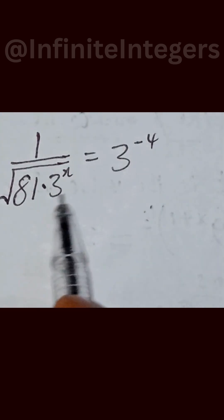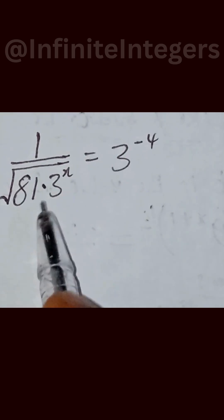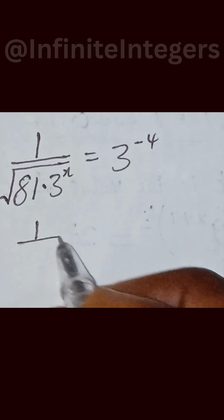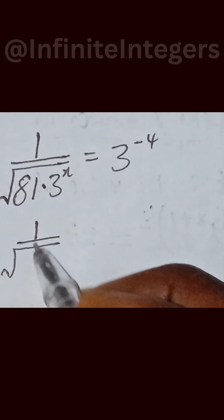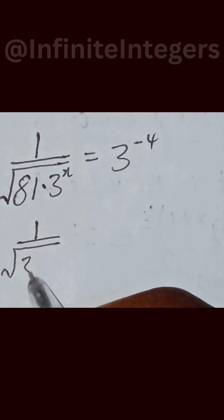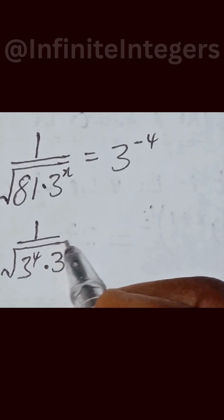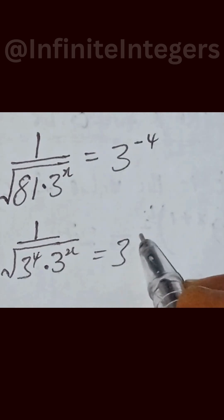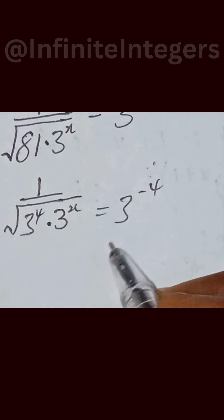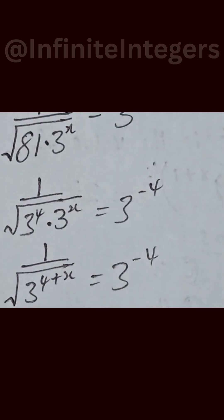To get the value of x from this expression, the next step is 1 over the square root of 3 raised to power 4, multiplied by 3 raised to power x, equal to 3 raised to power minus 4. The exponents are added together, giving 1 over the square root of 3 raised to power 4 plus x, equal to 3 raised to power minus 4.